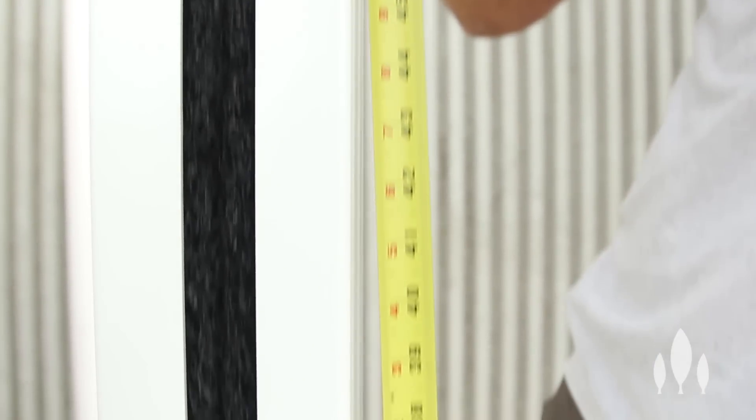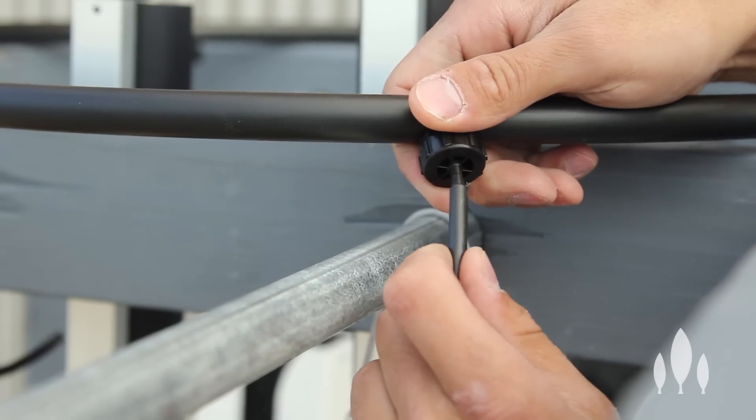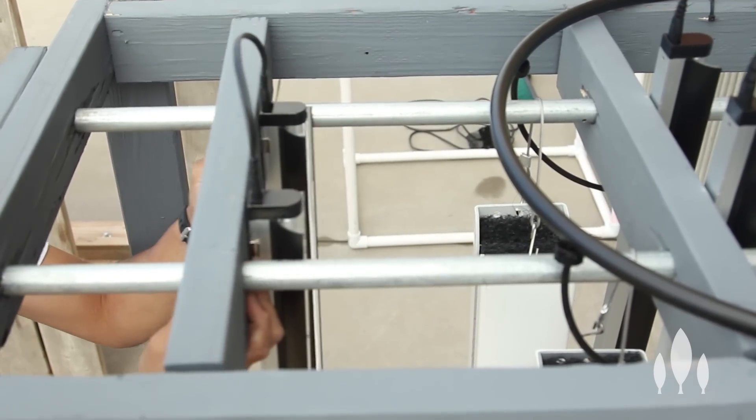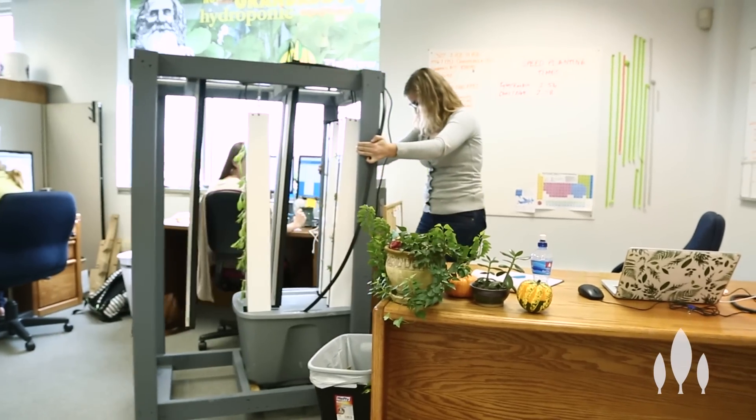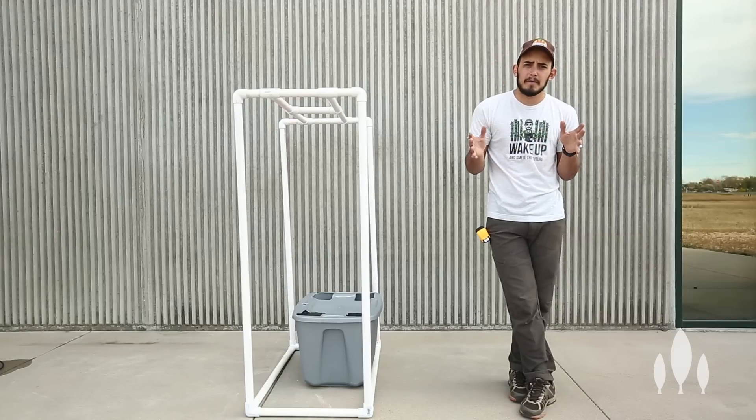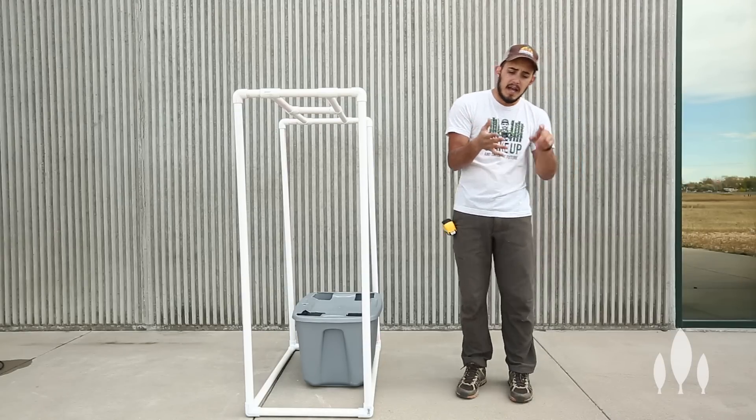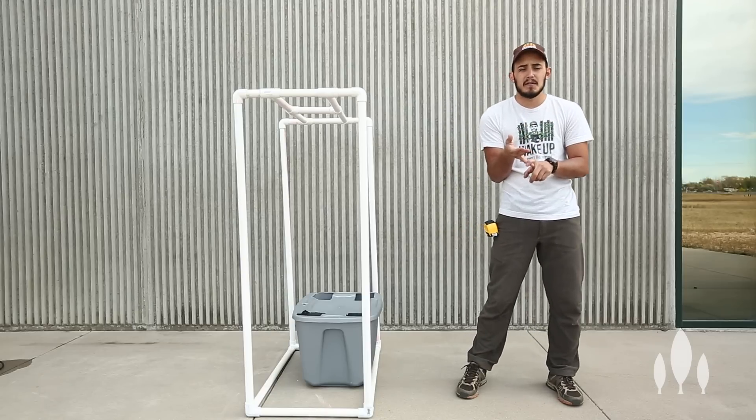So what we're gonna talk about first is basic dimensions that you need to think about when you're building your own system, how to conform those dimensions so you can add proper lighting, and then plumbing that system.